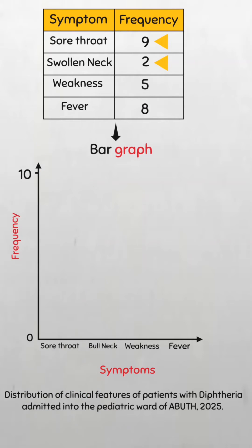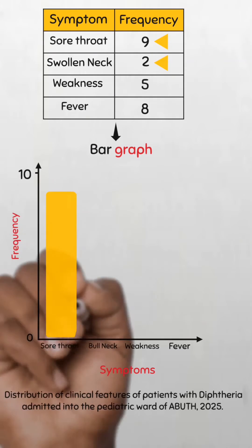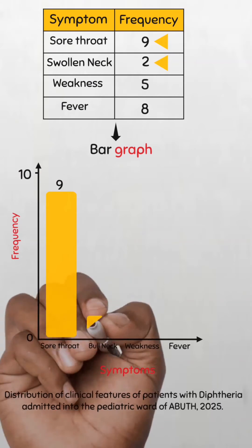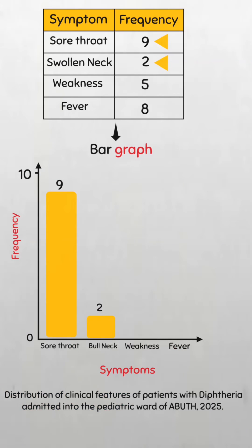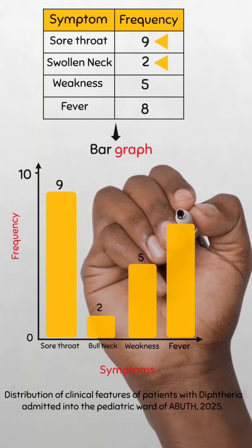And finally, we draw the bars to represent each category. For the first category, sore throat, the frequency is 9. The second, bull neck, frequency is 2. The third, weakness, frequency of 5. And the fourth, fever, is 8.